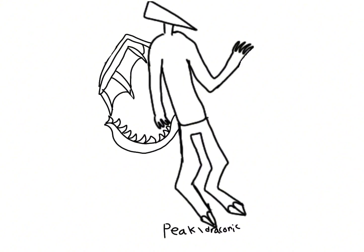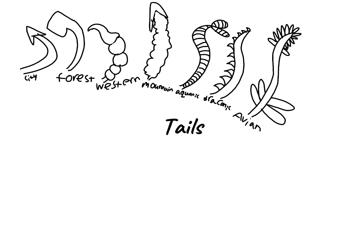Then we have the draconic, which is the least common. They live high up on peaks — you can see the word 'peak' in the name. I already mentioned these so I'll skip ahead.